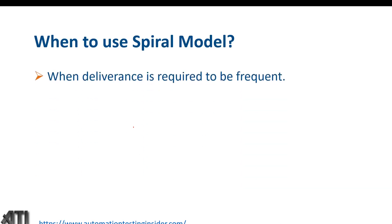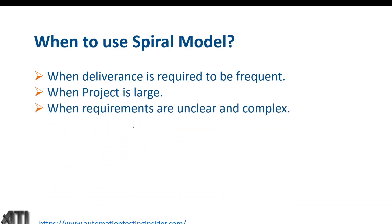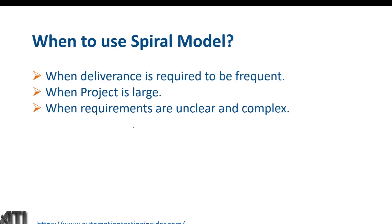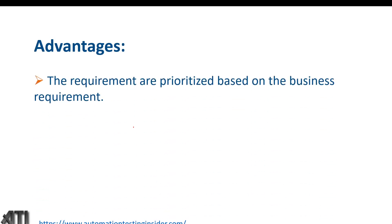When should we use spiral model? When deliverables are required to be frequent — when we get frequent requirements from the customer. When the project is large. And when requirements are unclear and complex, we should go for spiral model, because this model has high risk analysis and we can incorporate requirements in the middle as well.